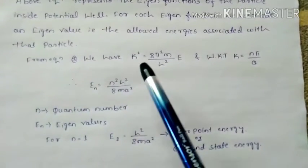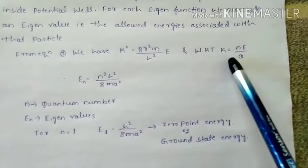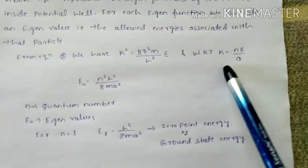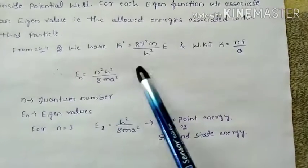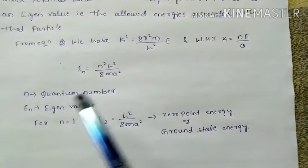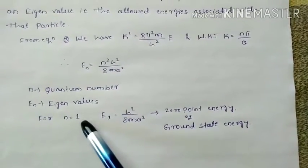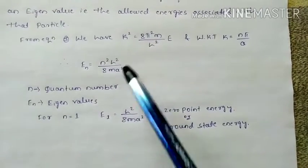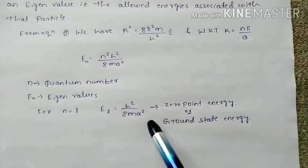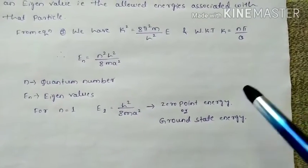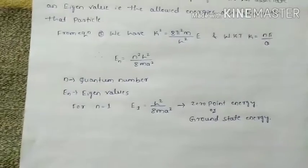From equation 3, k² equals 8π²m/h² times E, and we know k equals nπ/A. Substituting this k value and solving for E gives the energy eigenvalues: E equals n²h² divided by 8mA², where n is the quantum number. If we substitute n equals 1, we get E₁ equals h²/(8mA²), which is called the zero point energy or ground state energy. Thank you dear students.